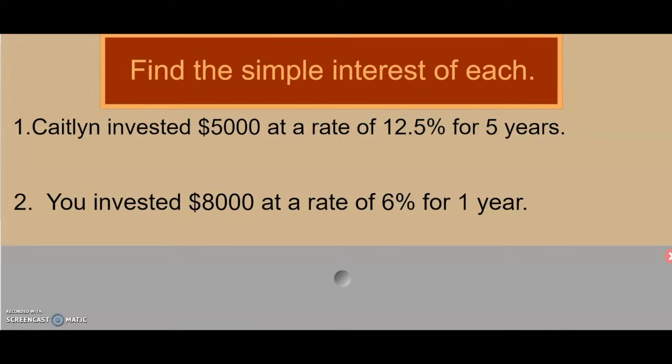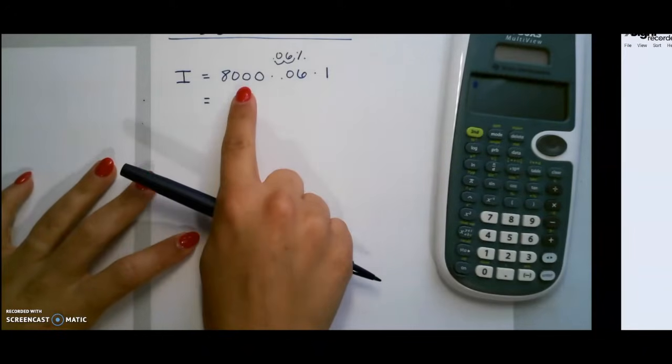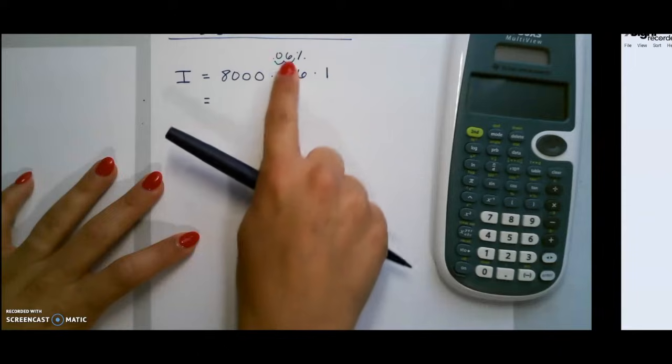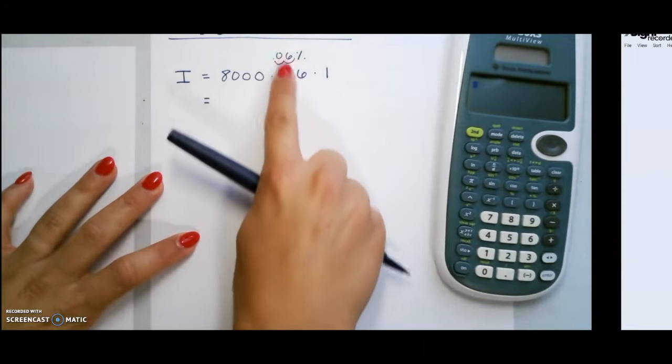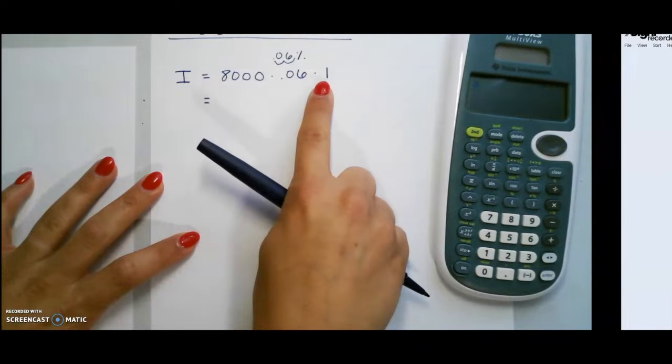For our next example, you invested $8,000 at a rate of 6% for one year. So here, $8,000 is the principal amount because it's the amount you invested. 6% was our rate, so we moved our decimal two places to the left and added our decimal point times one.